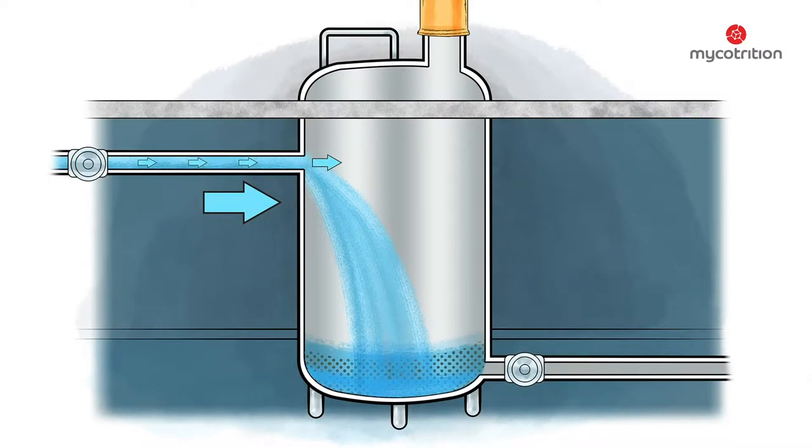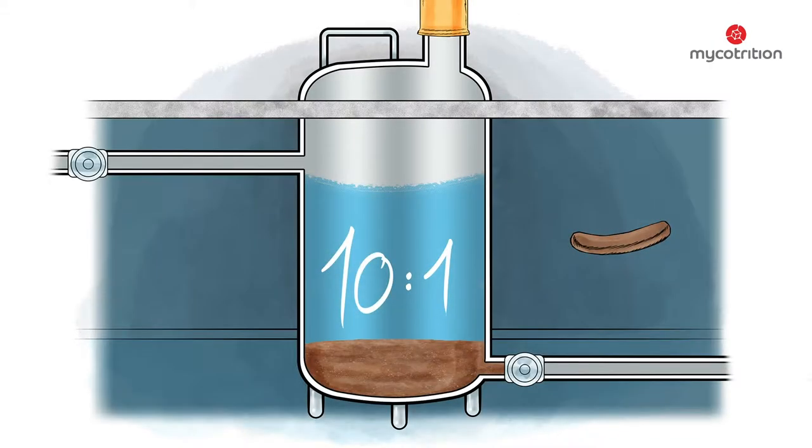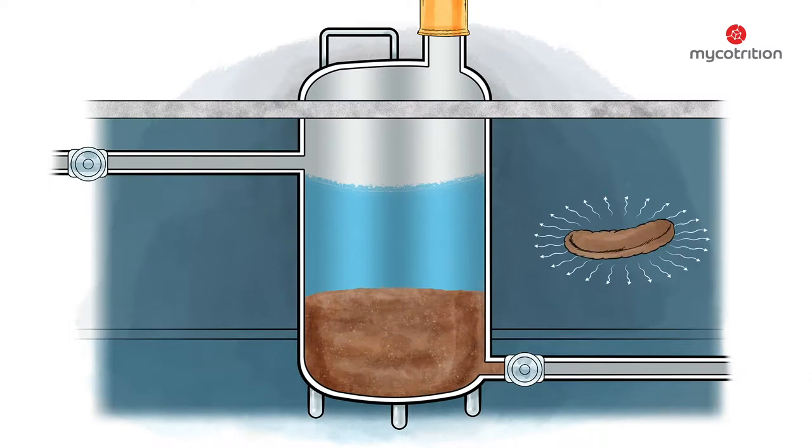The tank is now filled with purified water. The ratio between water and milled mushrooms is 10 to 1. The milled mushrooms then soak and slowly macerate.